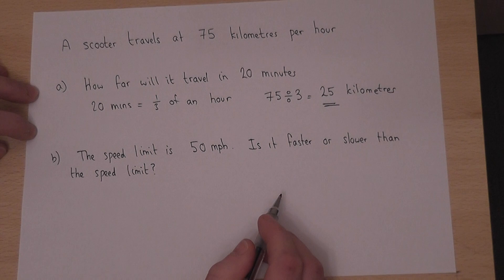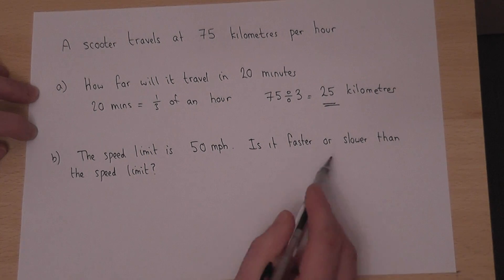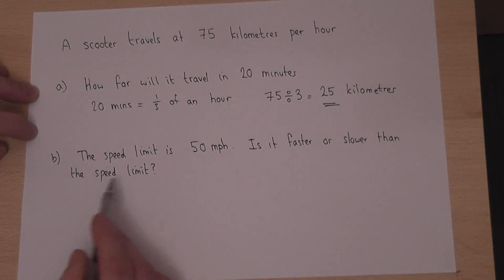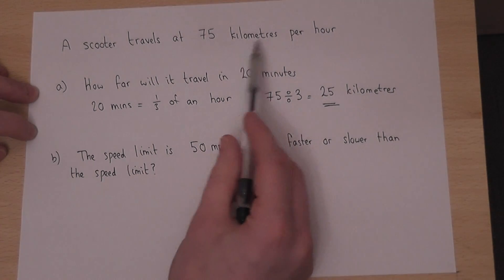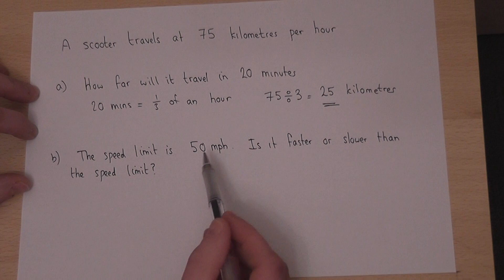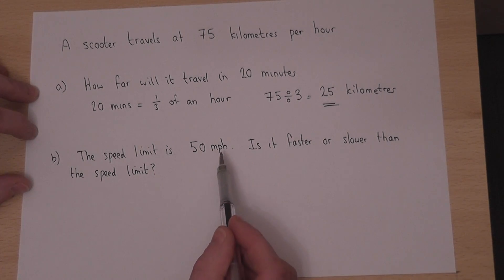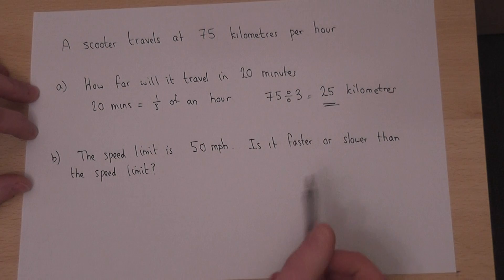In part B we are asked, is it faster or slower than the speed limit of 50 miles per hour? We know the speed in kilometers per hour, so we must convert this speed into kilometers per hour.